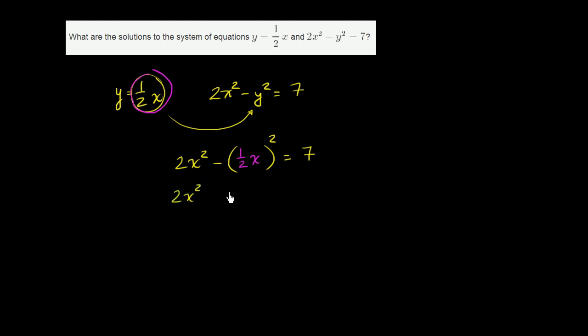So we get 2x squared minus, so 1 half squared is 1 fourth, and then x squared. So we could say x squared over, let me write that as 1 fourth. So it's 1 fourth x squared is equal to 7.